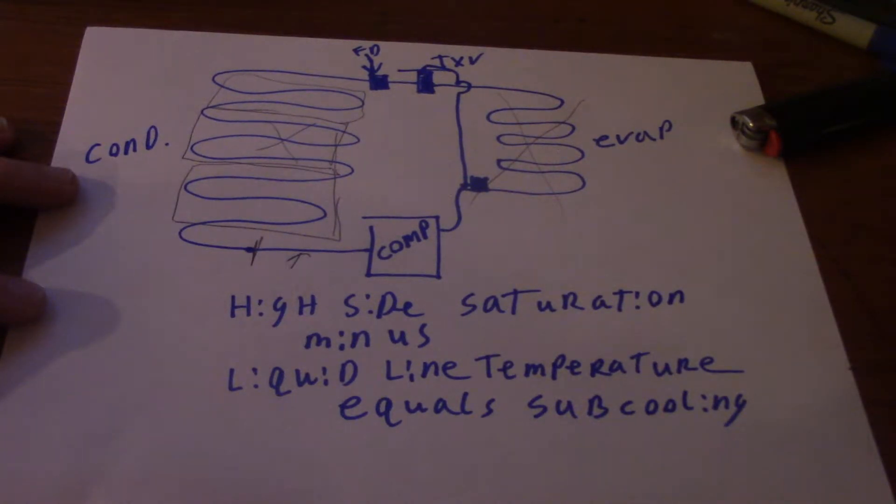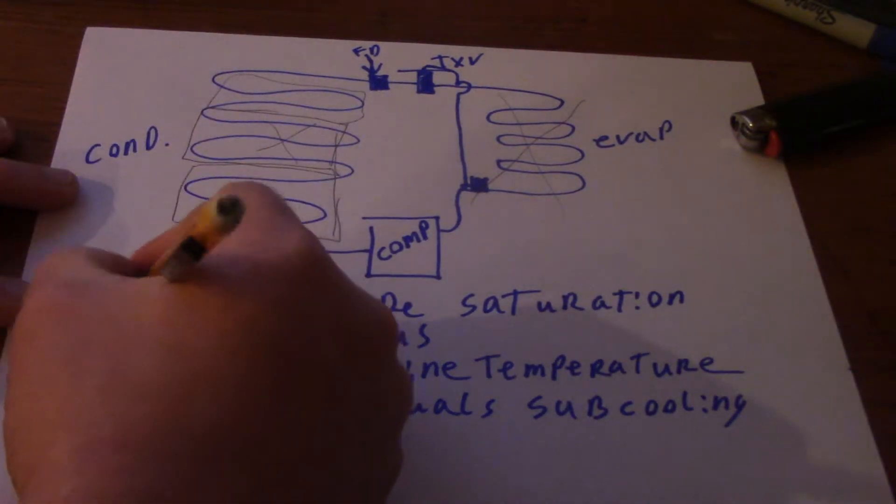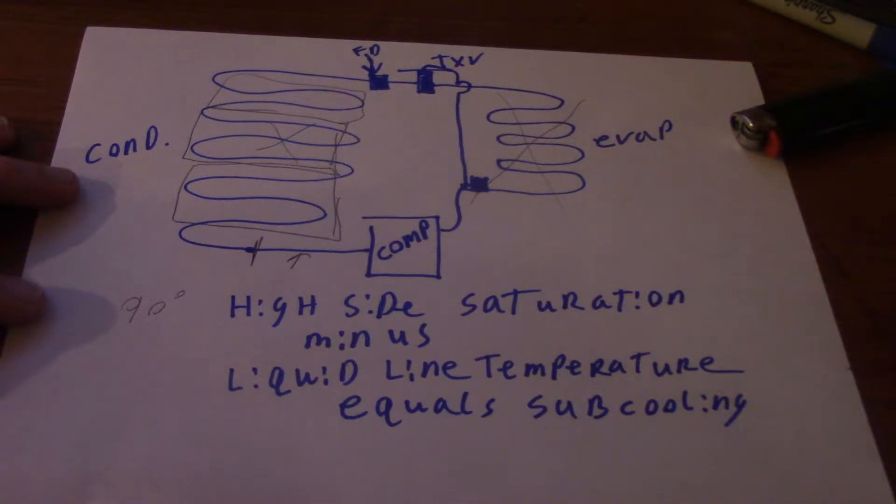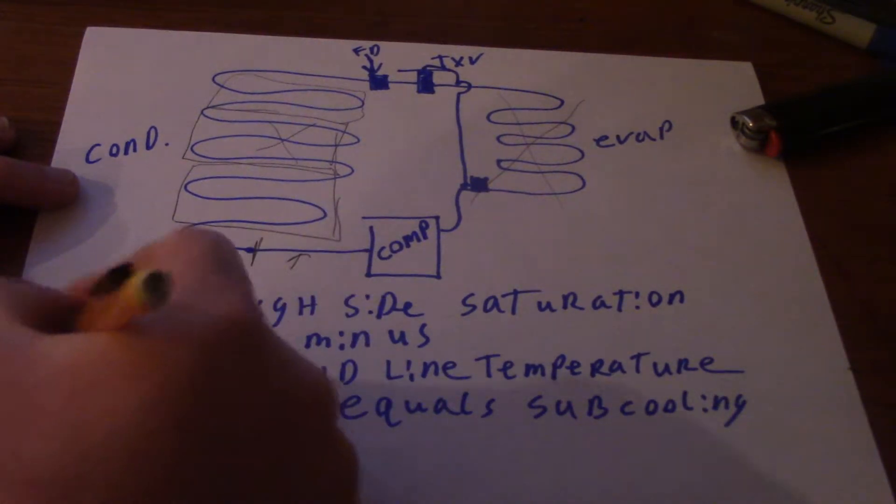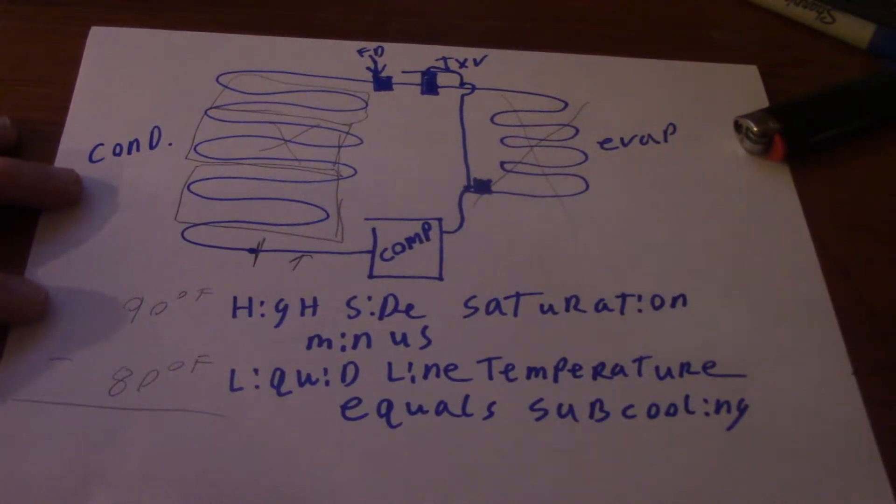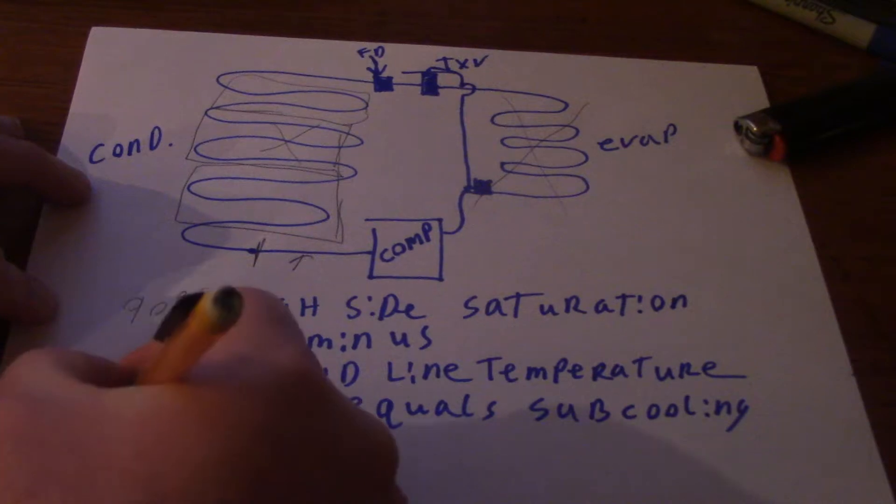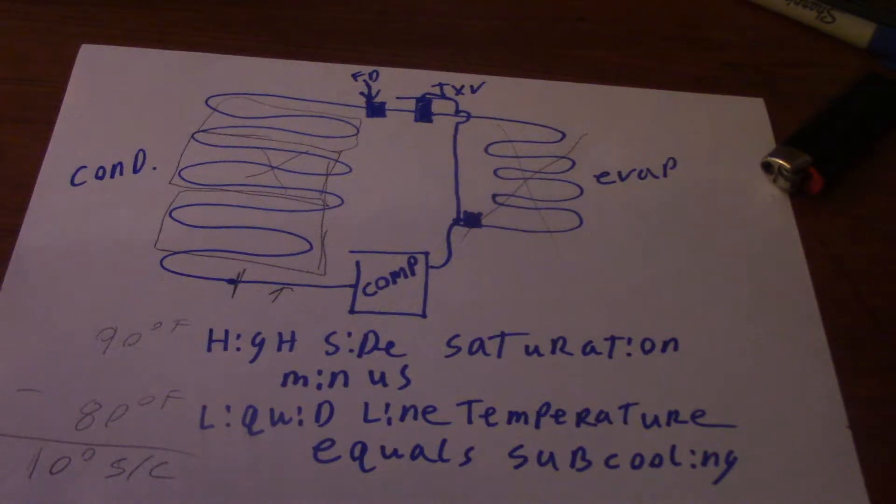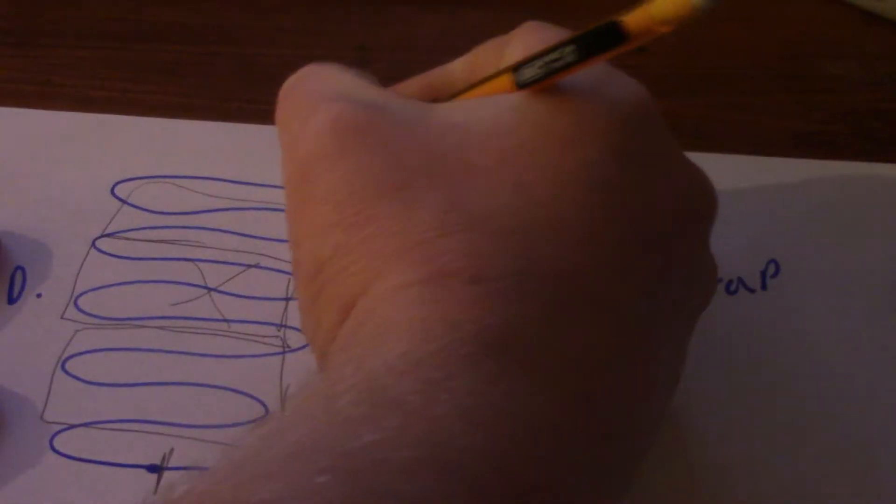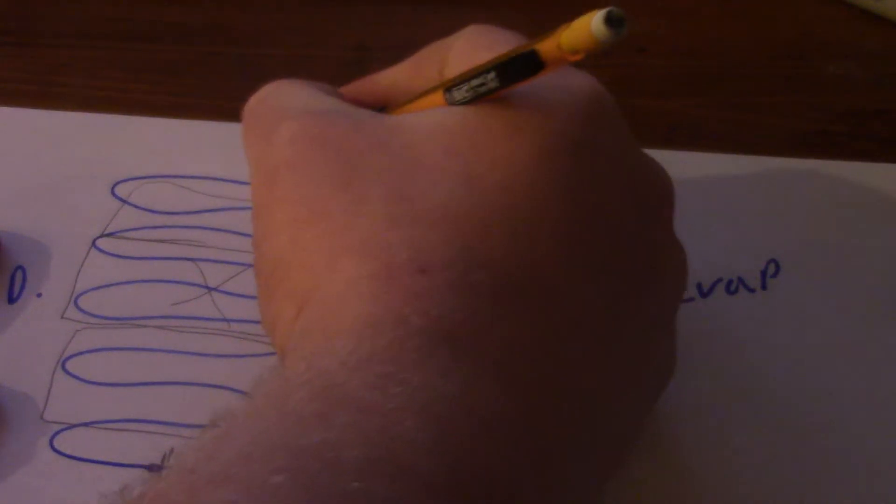Let's say we've got a high side saturation of 90 degrees for our refrigerant. It just doesn't matter on the type, it's just the temperature we have. If you have a liquid line temperature of, let's say 80 degrees Fahrenheit minus equal, we're going to come up with a magic number of 10 degrees for subcooling. That's going to be taken on our high side of the system here, right in this general area right here.